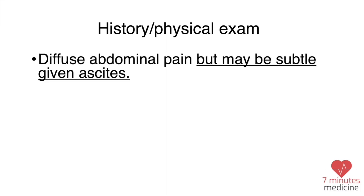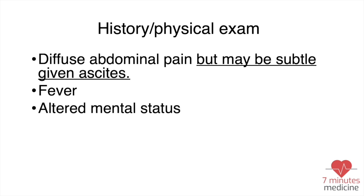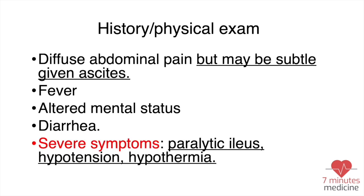For the history and physical exam, the patient may come with diffuse abdominal pain, but it might be subtle sometimes. They might have fever, altered mental status, and diarrhea. Even if you don't have all of those findings and you have a patient with liver cirrhosis and ascites, you have to suspect SBP. Some severe symptoms include hypothermia, hypotension, and paralytic ileus.